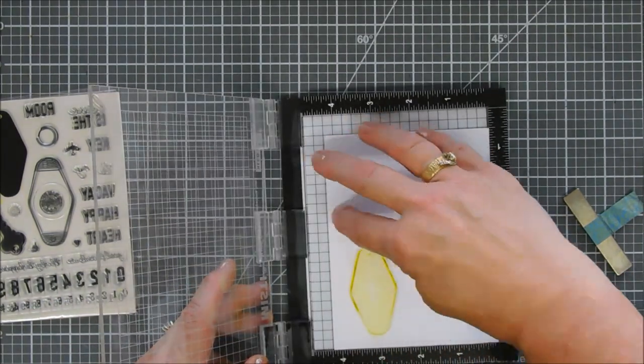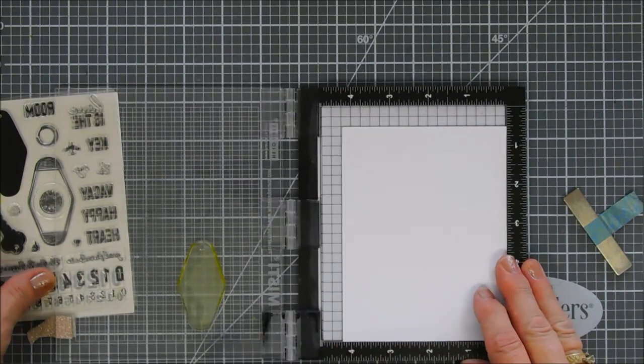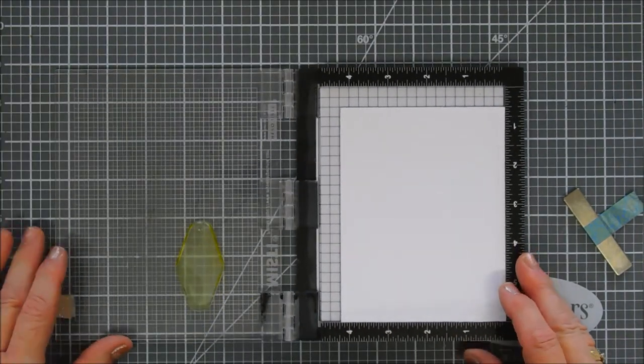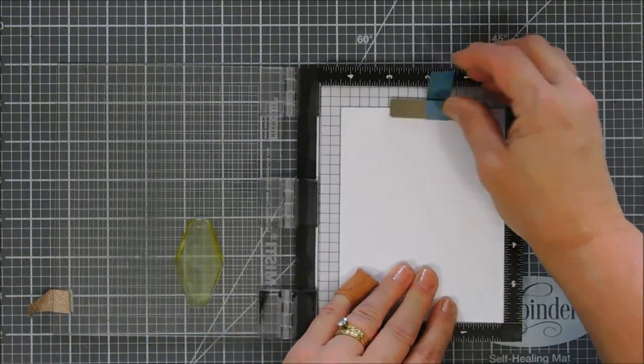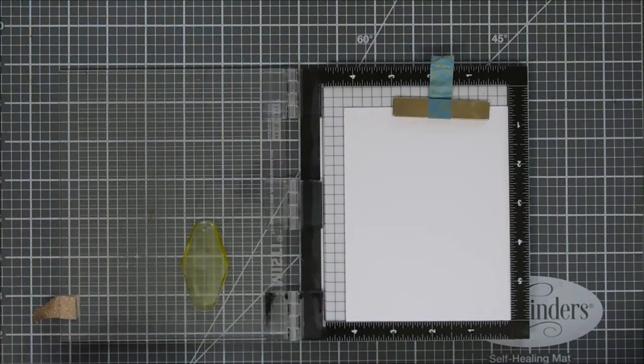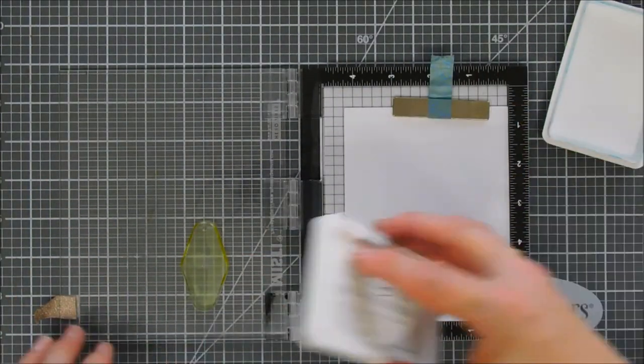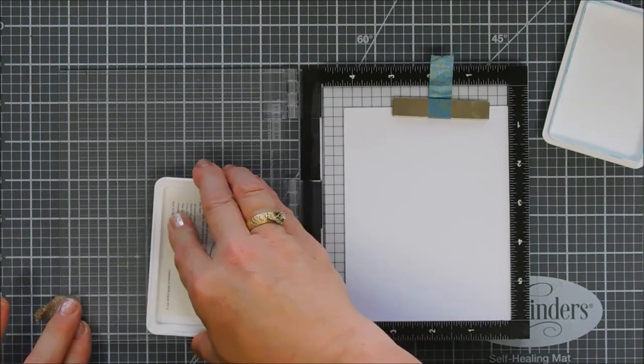Sometimes the Spellbinders card kits of the month have their stamp sets as add-ons where you could purchase the stamp set outside of the kit. If this is a card kit extra I will leave the link to this stamp set down below. It's super fun. I think it's very original too.